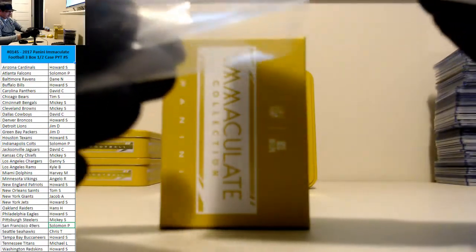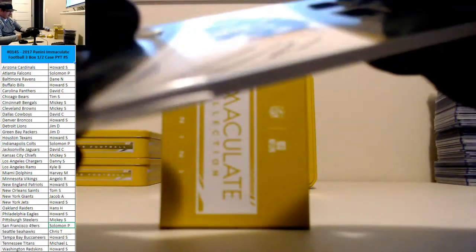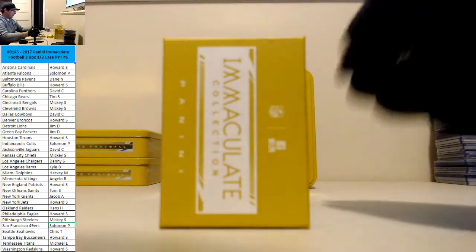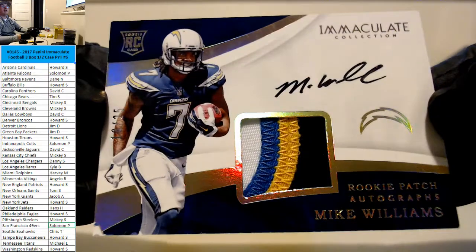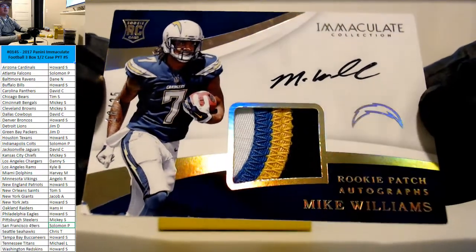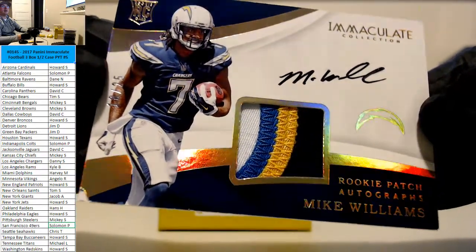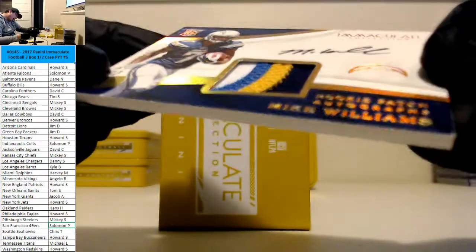Yeah, that dual shield. Oh, my goodness. That one's going on the gram. And our RPA, nice patch here for the Chargers, Mike Williams. Danny gets his wish. Rookie patch autograph, Mike Williams. 18 of 25.